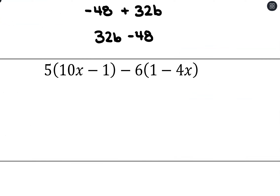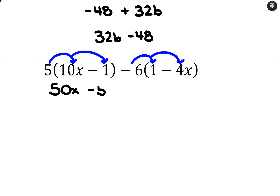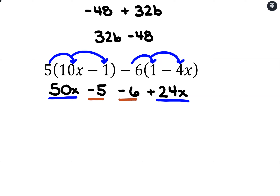Here we have two sets of parentheses. The 5 distributes into the first set and negative 6 distributes into the second. So: 5 times 10x is 50x, 5 times negative 1 is negative 5, negative 6 times 1 is negative 6, and negative 6 times negative 4x is positive 24x. Looking for like terms: 50x and 24x combine to 74x, and negative 5 minus 6 gives us minus 11. Result: 74x minus 11.